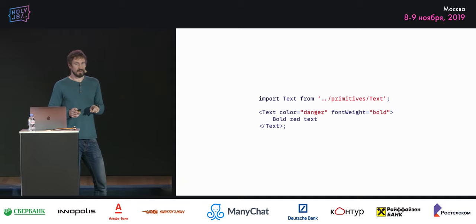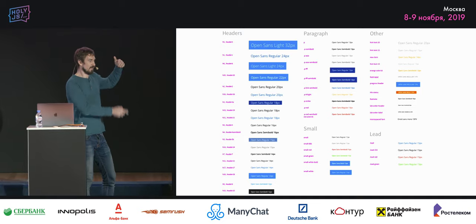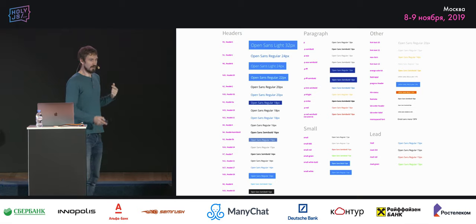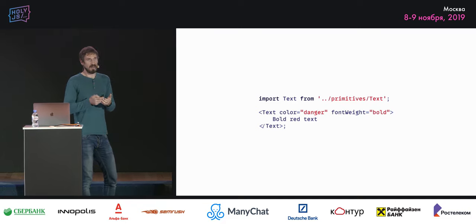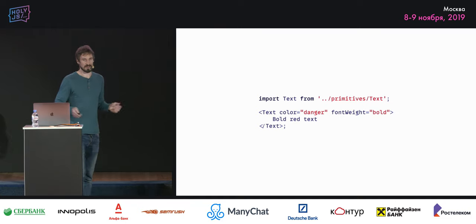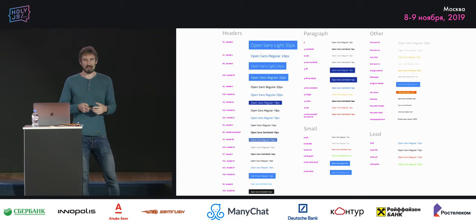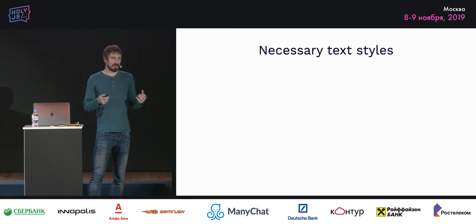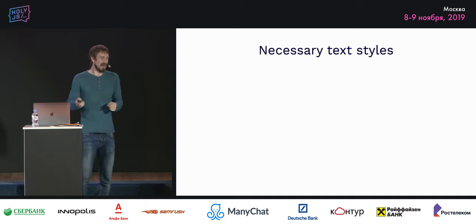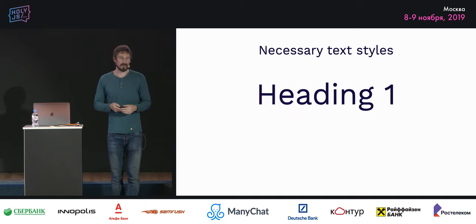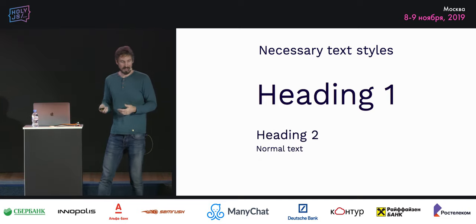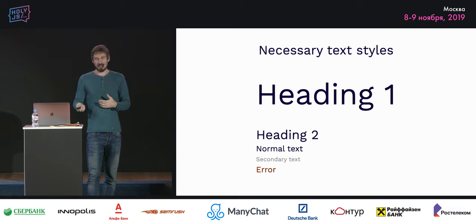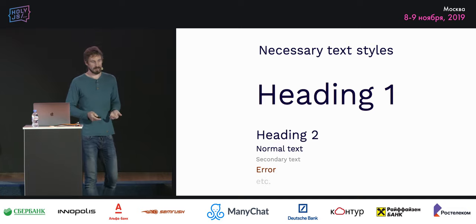Before going further — remember what we're fighting: too many different text styles. Just having these props won't help much, because the permutations could be thousands or tens of thousands. We need something more, and that 'more' is actually 'less' — less is more. We want to define only necessary text styles by looking at the whole product: how many heading levels do we need, normal text, secondary text (a bit smaller, gray), error text, and so on. Probably dozens in a real-world product.